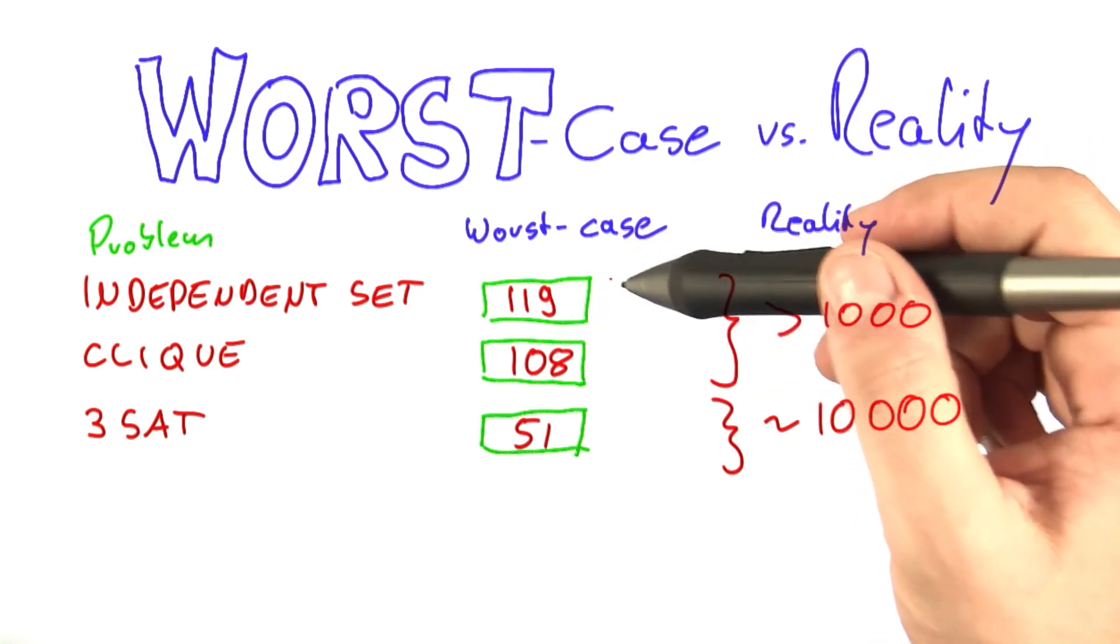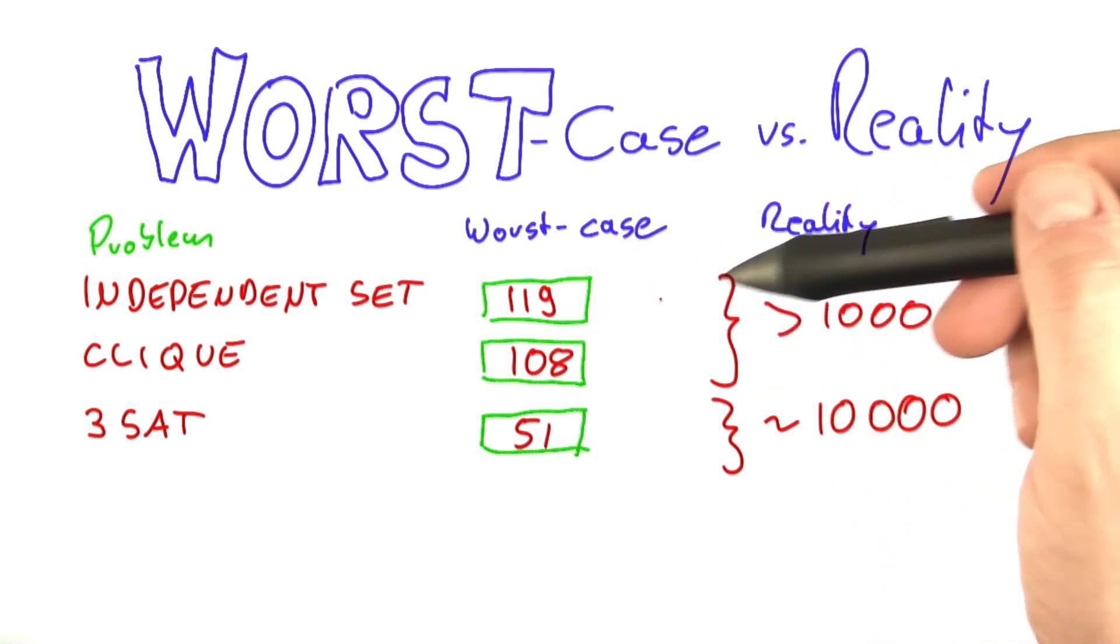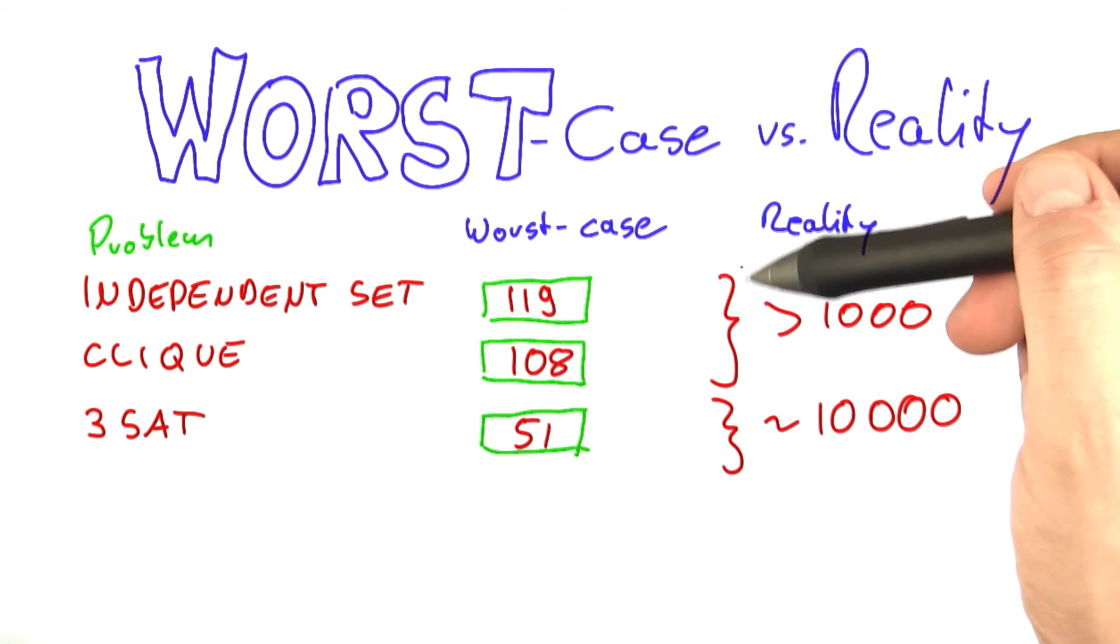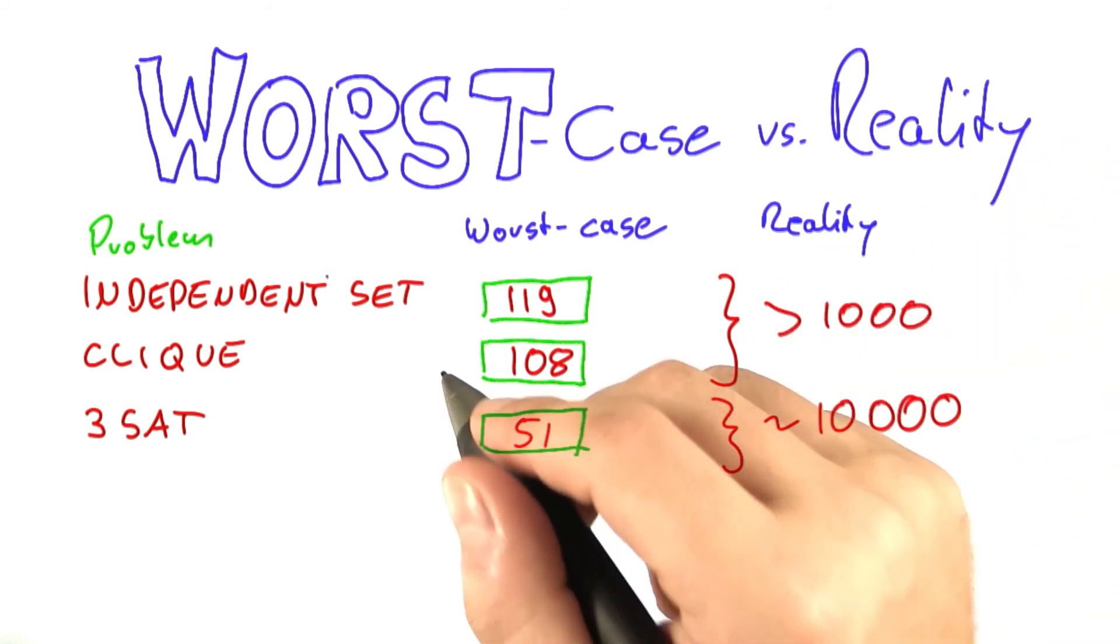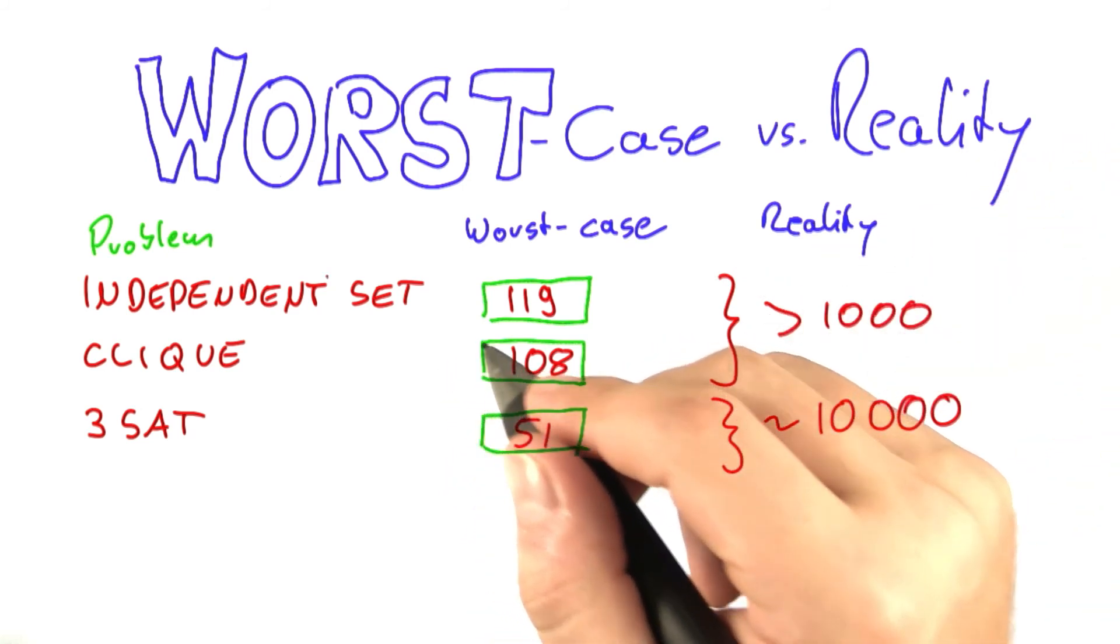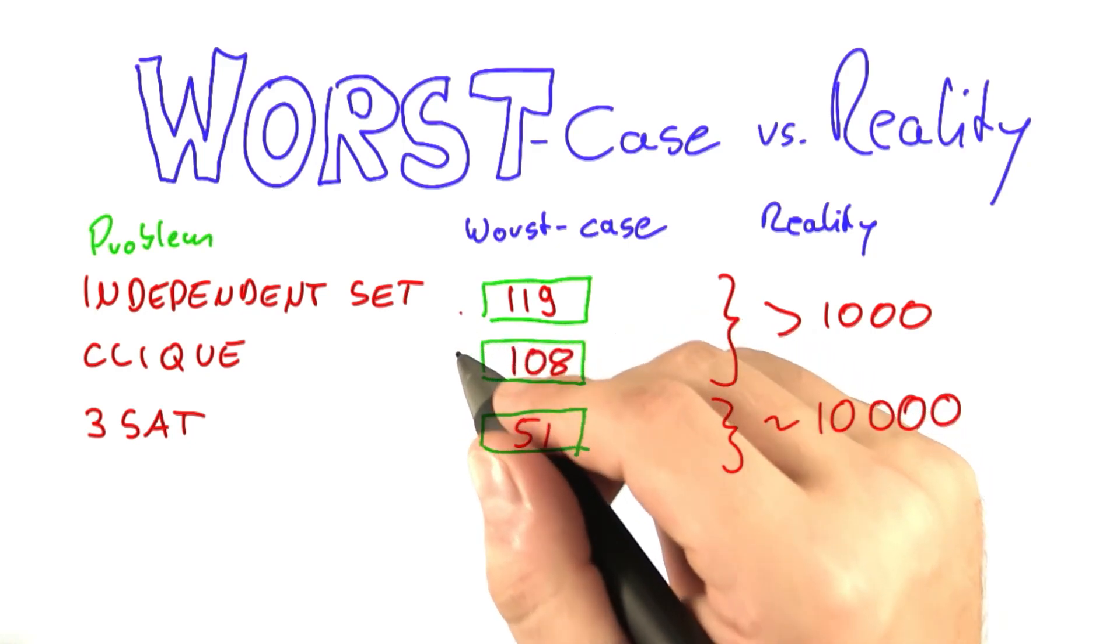And there's also besides search trees other very interesting techniques that you can use to further improve your running time of your algorithms. And I would now like to introduce to you preprocessing as another technique to deal with NP-completeness.